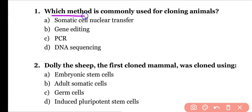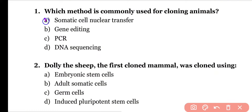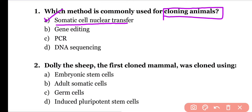Question number one: Which method is commonly used for cloning of animals? Options: somatic cell nuclear transfer, gene editing, PCR, DNA sequencing. Correct answer is option A. Somatic cell nuclear transfer is the most common method used for cloning of animals.